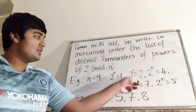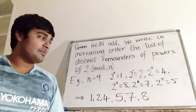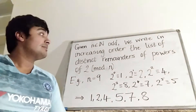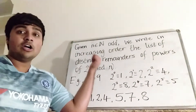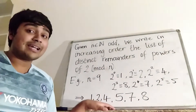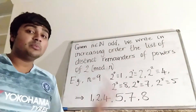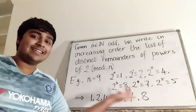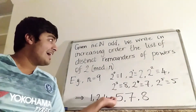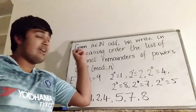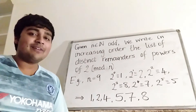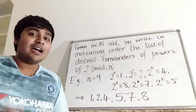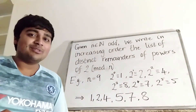So we look at the numbers 1, 2, 4, 8, 7, 5, and then we write them in order and get 1, 2, 4, 5, 7, 8. Now, given an odd natural number n, we can work out this list, but we want to know: can we do the opposite? If we're given this list, can we somehow reverse engineer and work out what n is? If you want to have a go at this problem, pause the video now, and I'm going to jump straight into a solution.